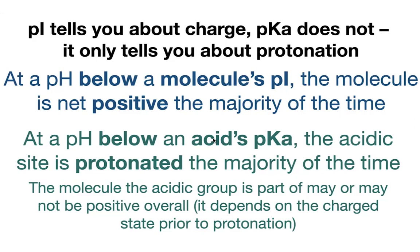A pKa is talking about a single ionizable site. It's saying that site is going to give up a proton — or take a proton if you're at a lower pH, so you're more likely to find it protonated. This does not tell you anything about charge; this only tells you about protonation at that individual site.